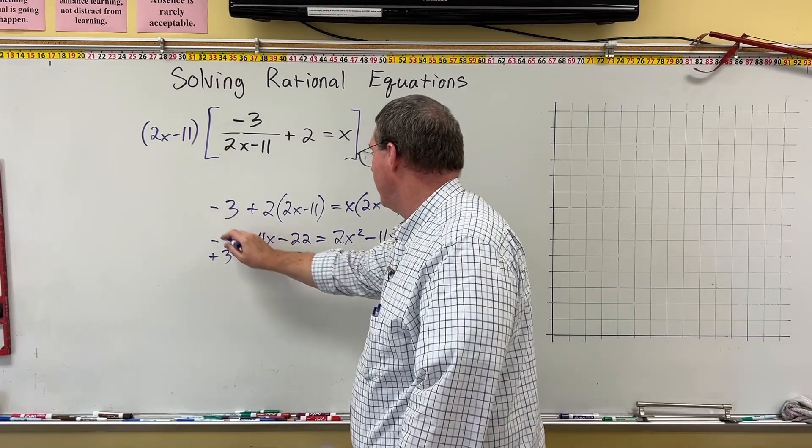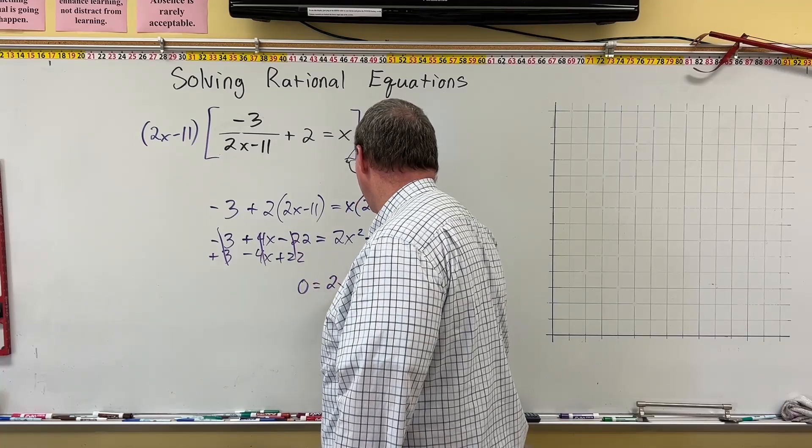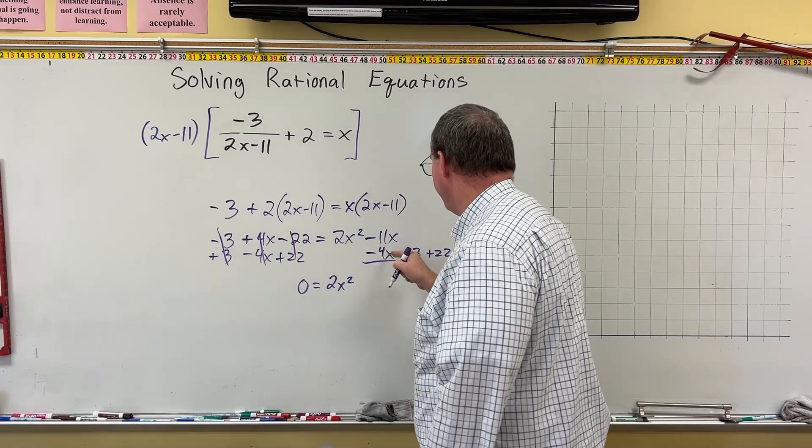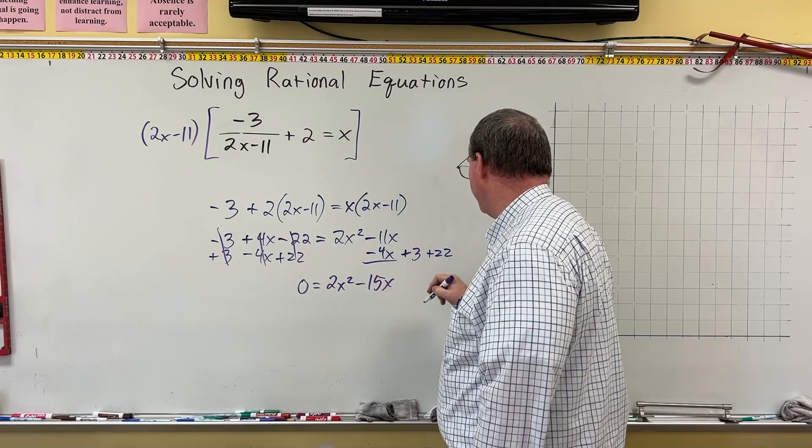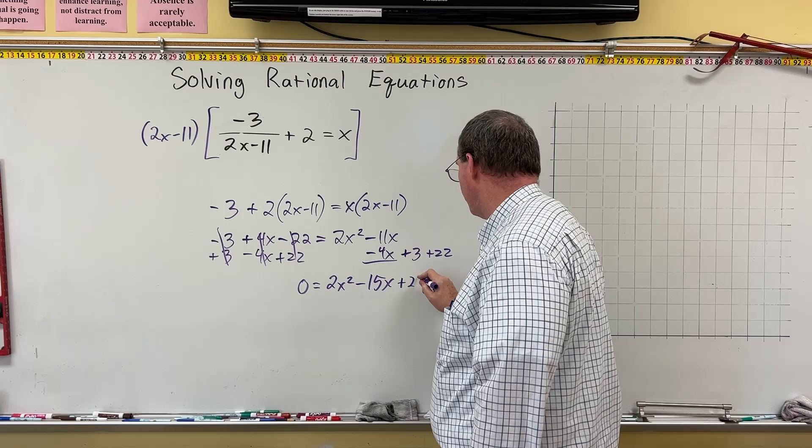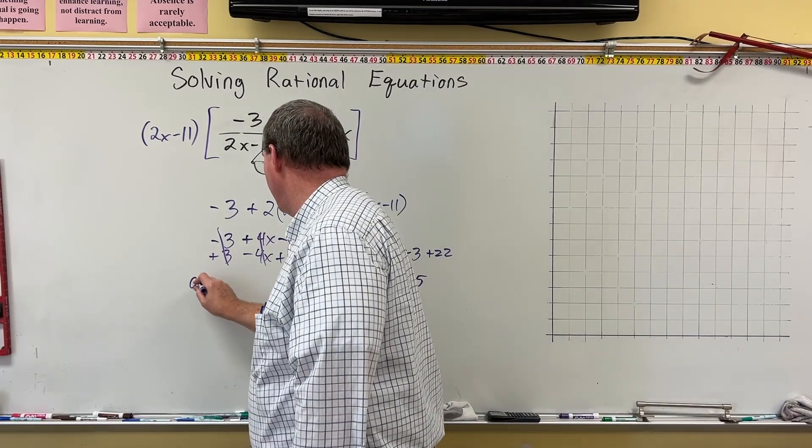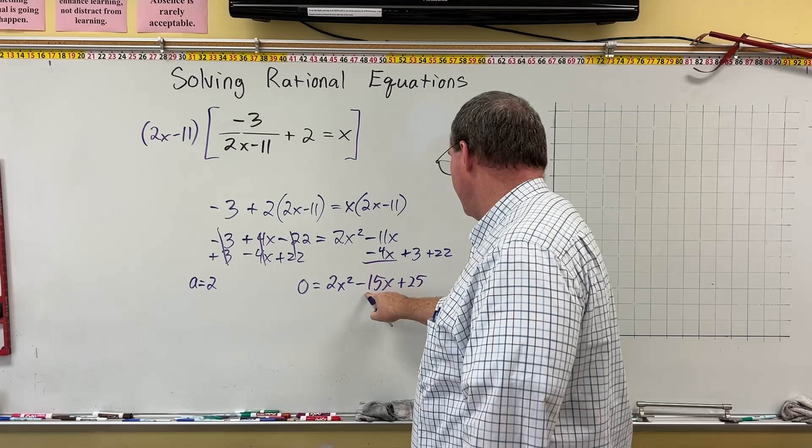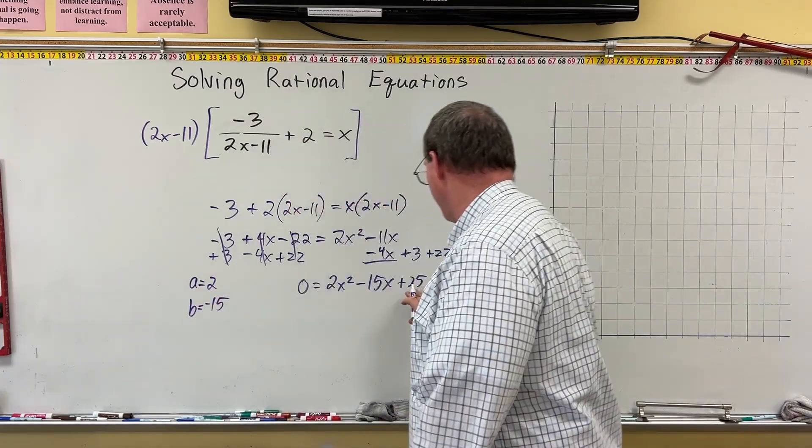Okay, so over here, cancel, cancel, cancel. We get 0 is equal to 2x squared and then negative 11x minus 4x is negative 15x. And then 3 plus 22 is 25. So that's plus 25. And so what we have here is a is 2, b is negative 15, and c is 25.